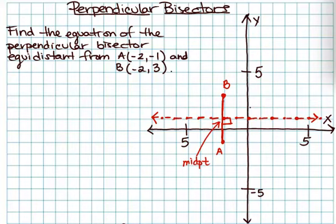So when you need to find the equation, there's a few things, a few steps you need to do. First, you have to find what the midpoint of the two points are. The midpoint is negative 2, positive 1.